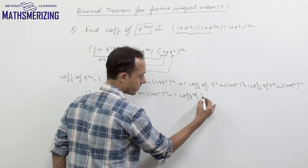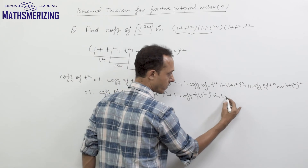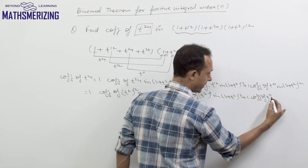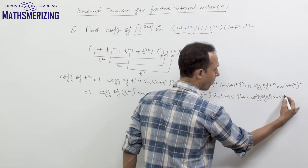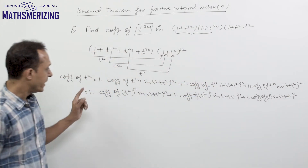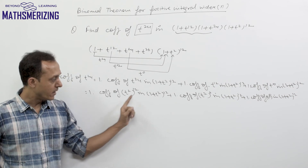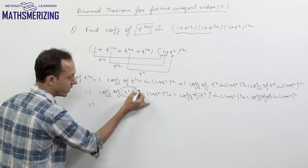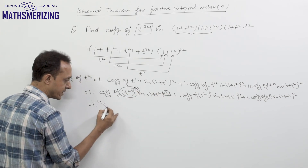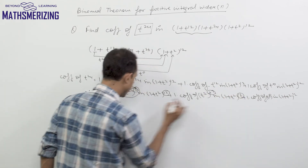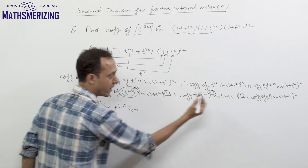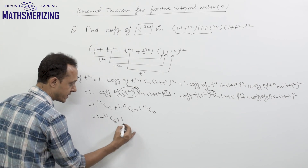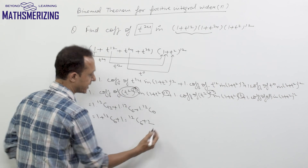Using the binomial coefficient formula — the coefficient of xʳ in (1 + x)ⁿ is nCr — we get: the coefficient of (t²)¹² is 12C12, the coefficient of (t²)⁶ is 12C6, and the coefficient of (t²)⁰ is 12C0. Since 12C12 = 1 and 12C0 = 1, the final answer is 12C6 + 2.